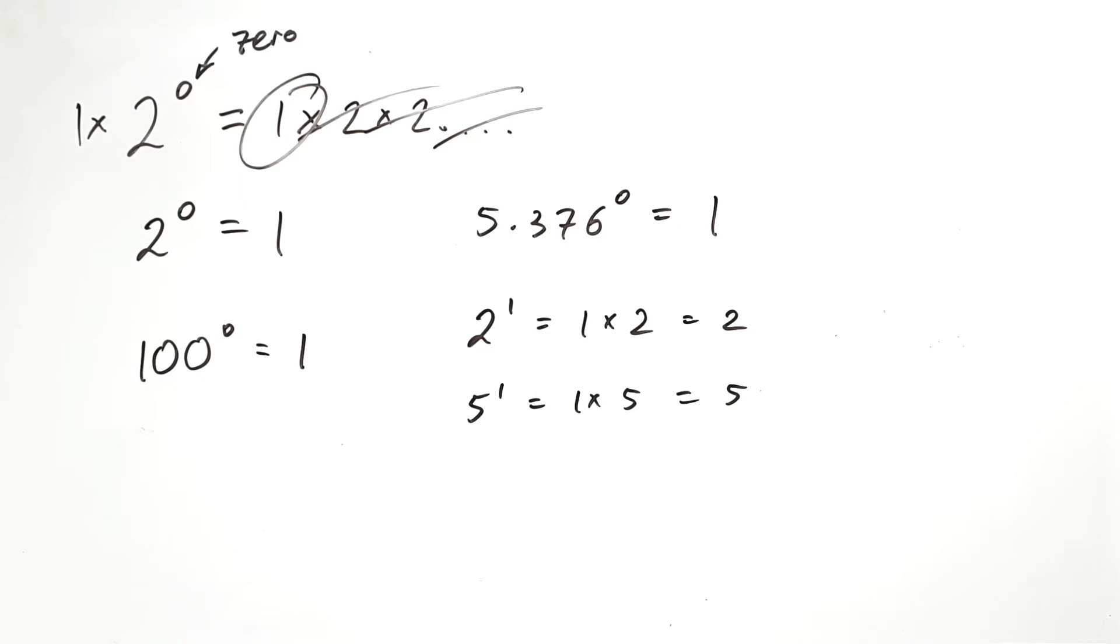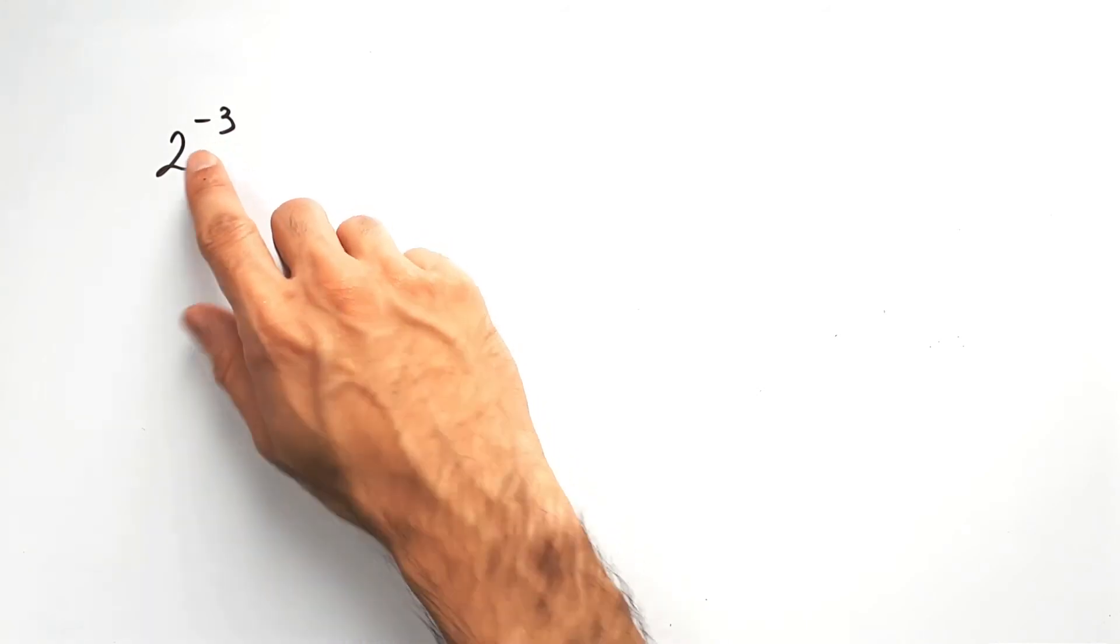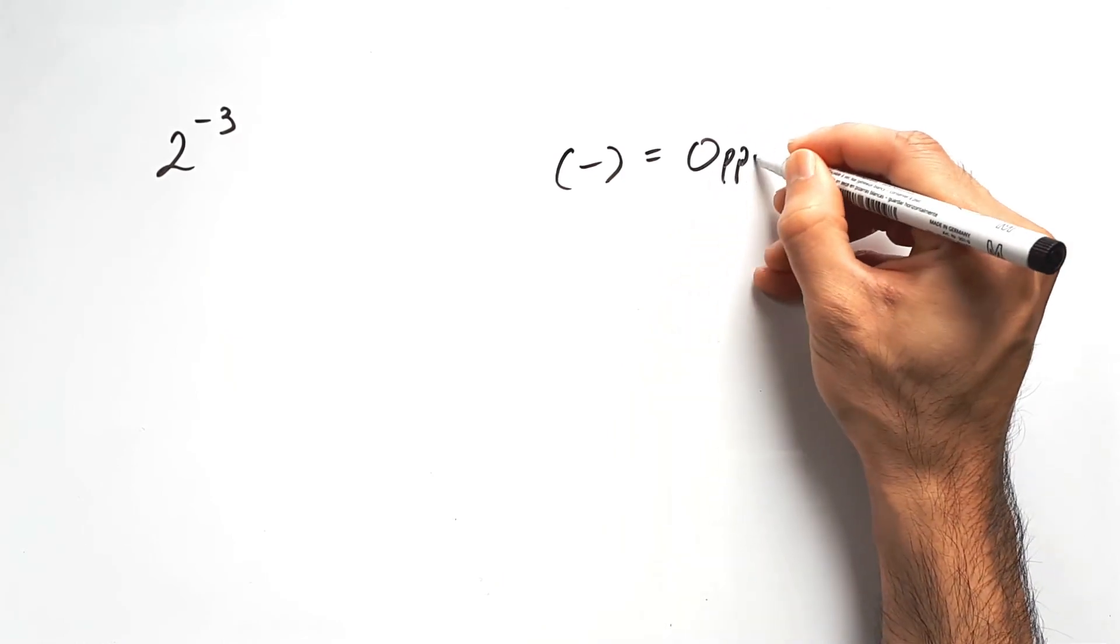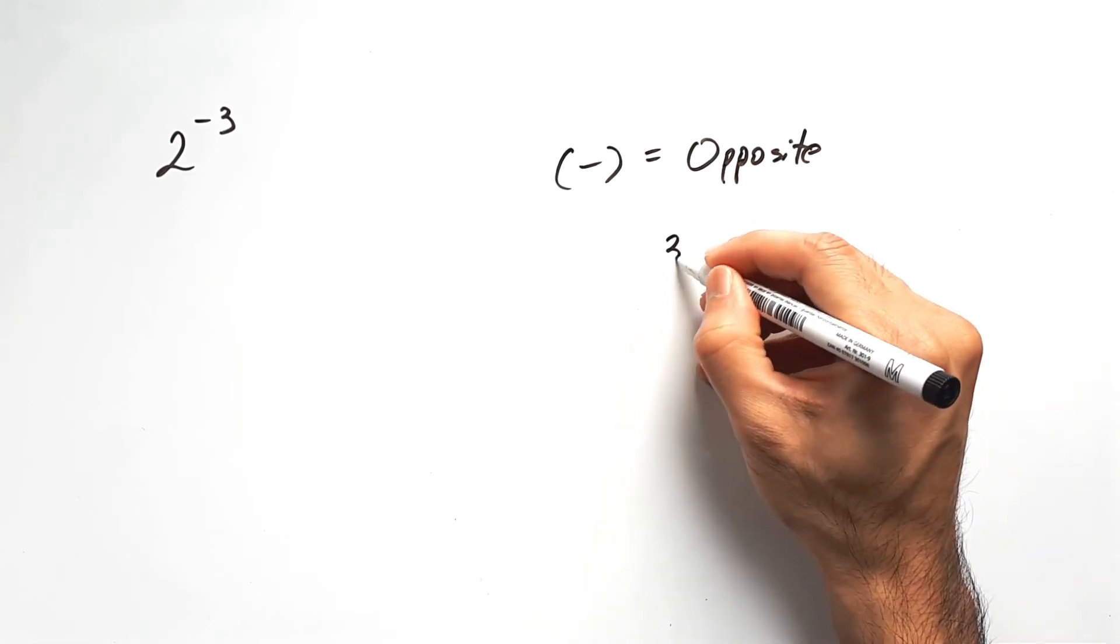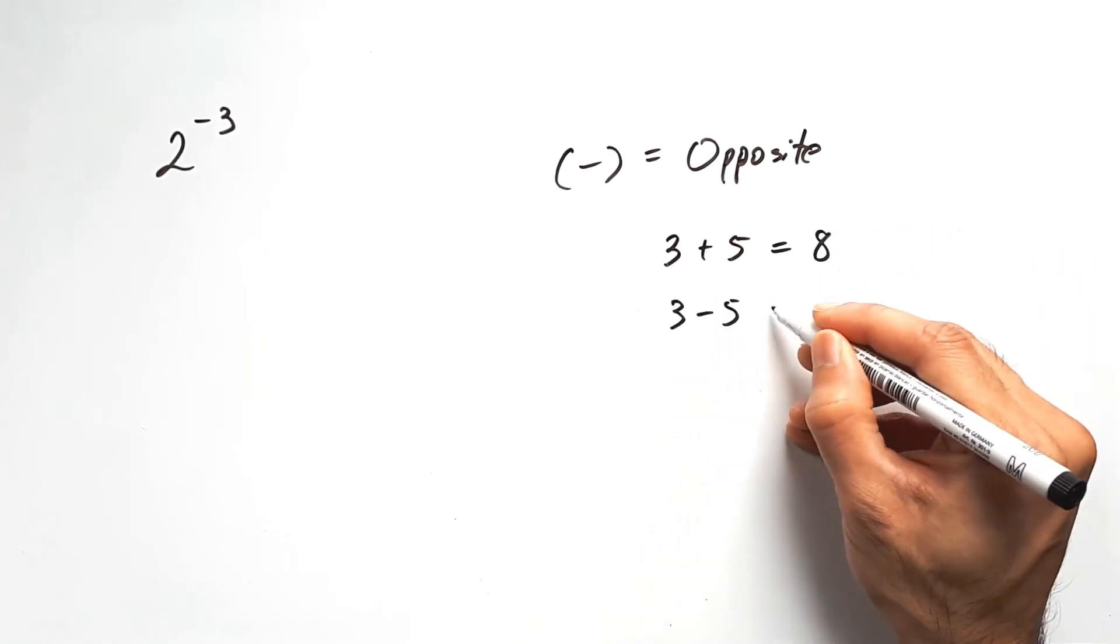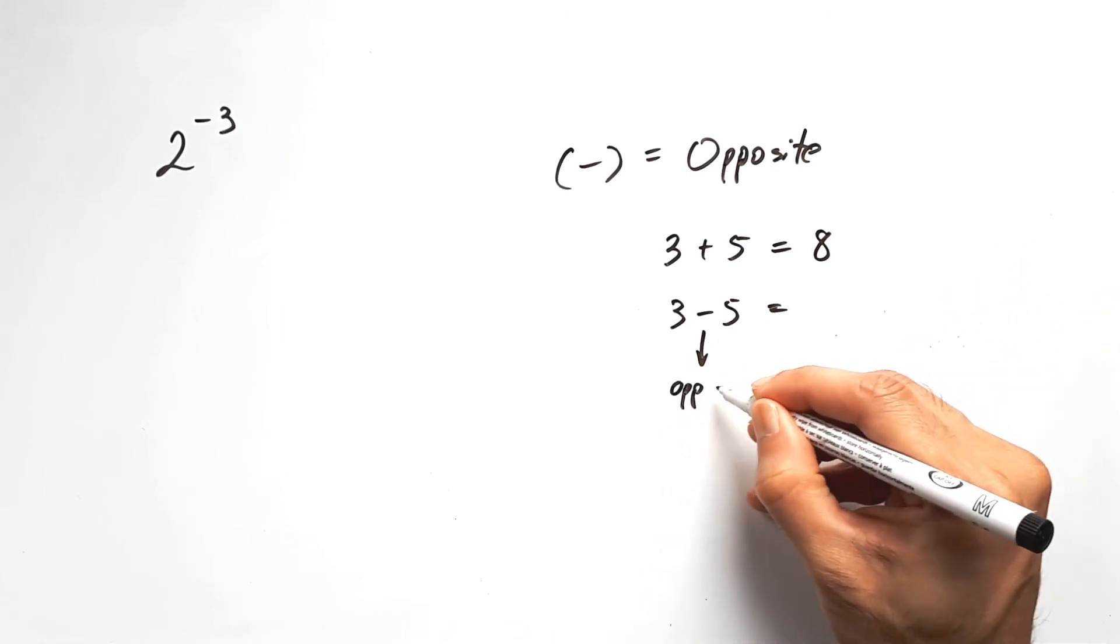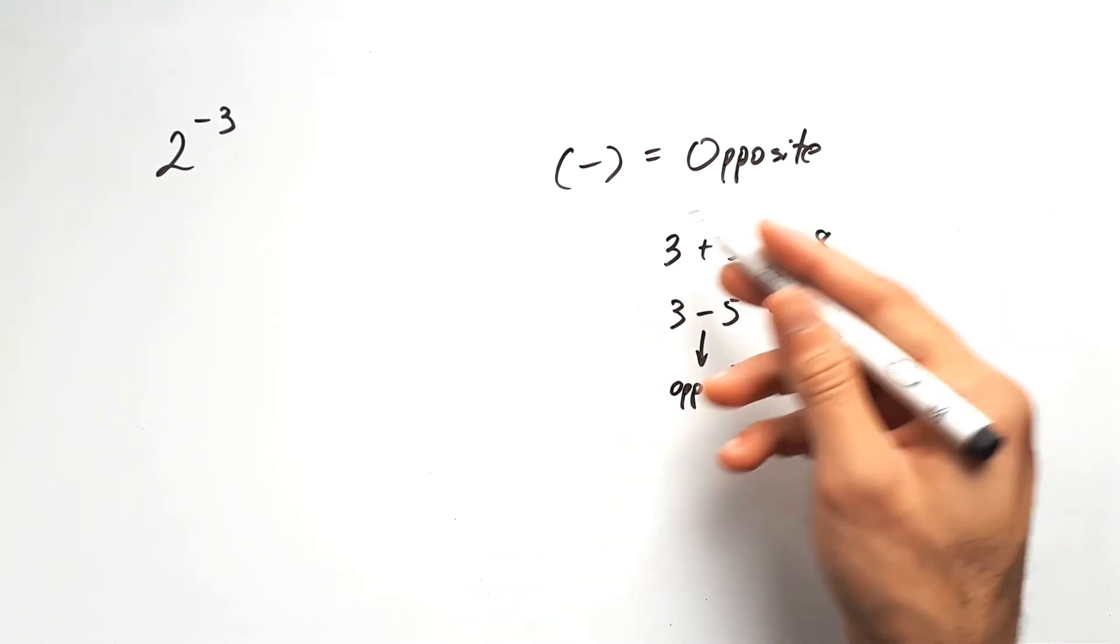The final case we're going to look at is negative powers. 2 to the power of negative 3. To understand how this negative works, we need to know what negatives mean. Negative basically means opposite. It doesn't mean minus. Let's be clear on this. If you had 3 plus 5, this means you take 3 and add 5 to it. 3 minus 5, the minus is actually a negative. It just means do the opposite of whatever plus does. And so you take away in this context.